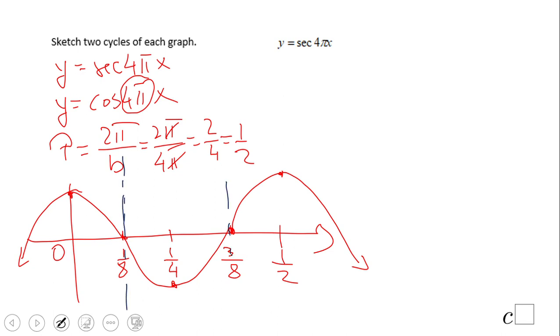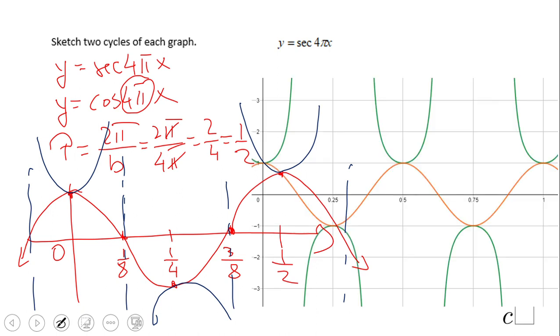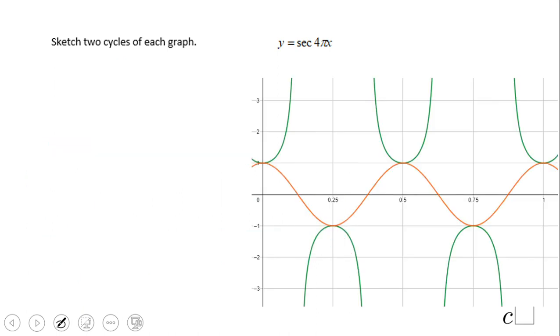Then I'm gonna draw the asymptotes—remember the asymptotes here—and then the U's. This is pretty much done, this graph. You see it better here. Okay, in case you wanna see it. Okay, so asymptote here, 1/8 in the middle, right here will be 3/8. Okay, and that's it for the secant of 4πx.